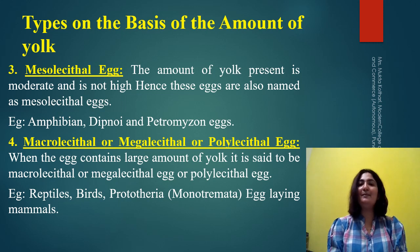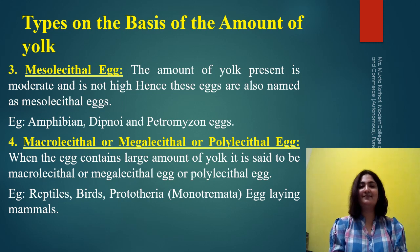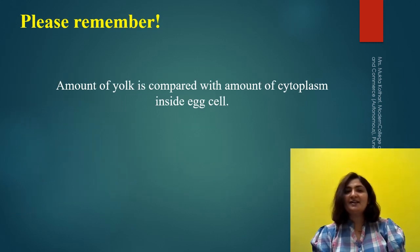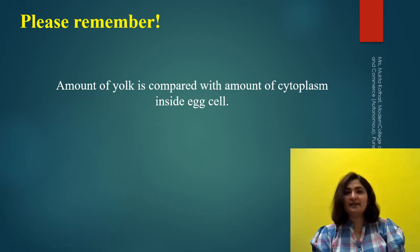The examples are reptilian eggs; avian eggs are the best example of the megalecithal type of eggs. Please remember that here we are comparing the amount of yolk with the amount of cytoplasm present inside the egg cell. So in a microlecithal egg, the amount of yolk is very small as compared to the amount of cytoplasm present inside the egg cell.